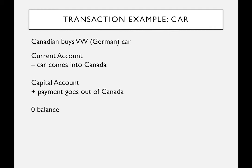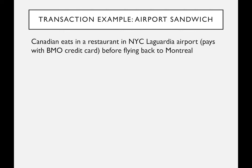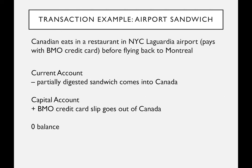Another example: a Canadian is at LaGuardia airport in New York, goes to the food court, has a club sandwich, and pays with a BMO credit card, then flies back to Montreal. In Canada's balance of payments, the partially digested sandwich brought into Canada is recorded as a minus on the current account — bringing a good or service into Canada. The credit card slip, which left Canada as payment, is recorded as a plus on the capital account. The two added together equal zero. Statistics Canada would record it as, say, minus ten dollars for the sandwich and plus ten dollars for the credit card slip going out.